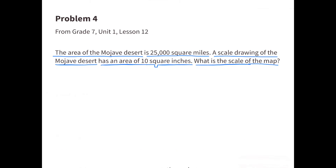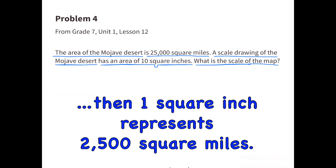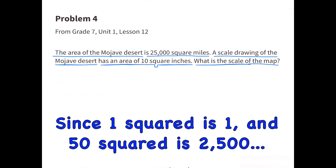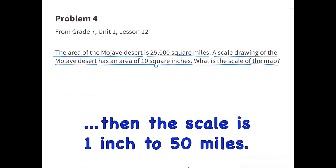Number 4. The area of the Mojave Desert is 25,000 square miles. A scale drawing of the Mojave Desert has an area of 10 square inches. What is the scale of the map? If 10 square inches represents 25,000 square miles, then 1 square inch represents 2,500 square miles. Since 1 squared is 1 and 50 squared is 2,500, then the scale is 1 inch to 50 miles.